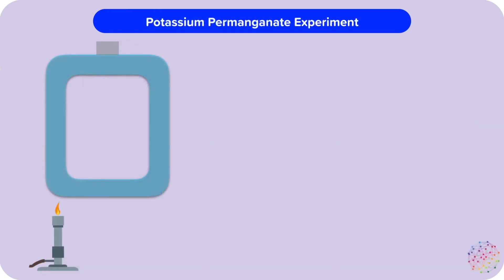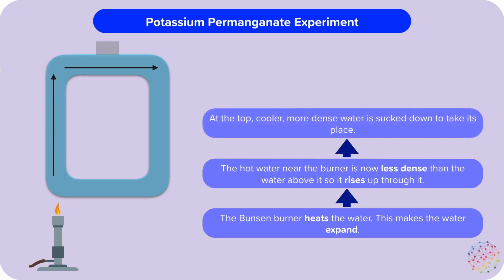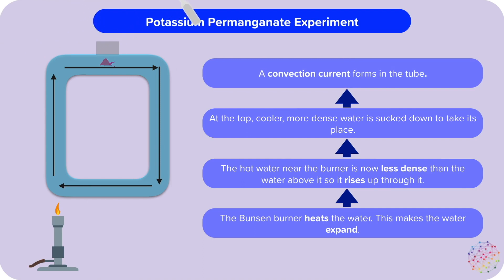Another good example of convection currents is an experiment with potassium permanganate dye. Your teacher will fill a tube with water and light a Bunsen burner under one column. The Bunsen burner heats the water and this makes the water expand. The hot water in the bottom left hand corner is now less dense than the water above it, so it rises up through. At the top, cooler more dense water is sucked down to take its place. And a convection current will form in the tube. This is difficult to see, so we add potassium permanganate dye and watch how it moves around the tube.